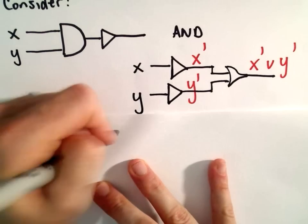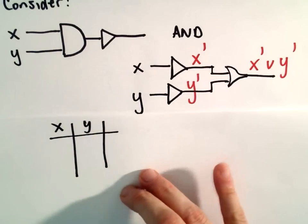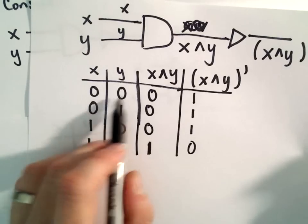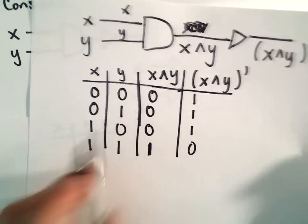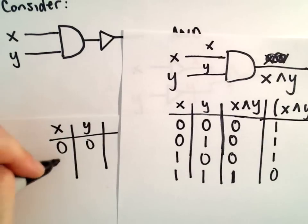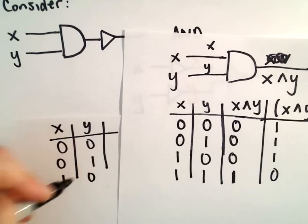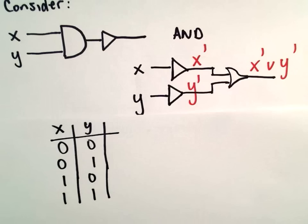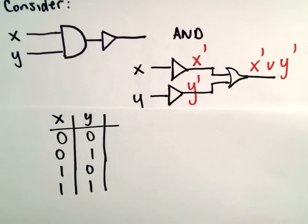Same thing, we've got x and y. I'm going to use the same order for my inputs: 0,0; 0,1; 1,0; and 1,1. That way it'll be easy to see if our truth tables are the same or not.